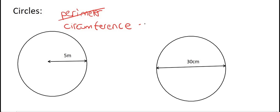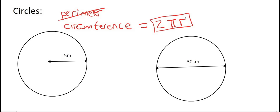So to work out circumference, you're going to use 2 pi r. What this means is you take the number 2, multiply it with pi, and then multiply it with r on your calculator — where r is the radius of the circle.